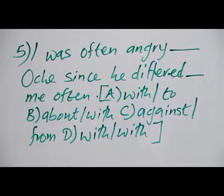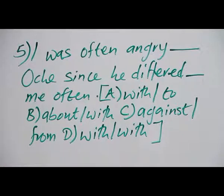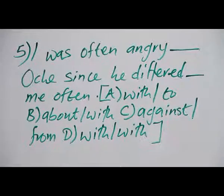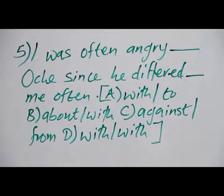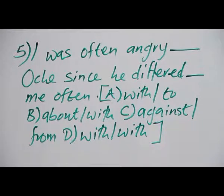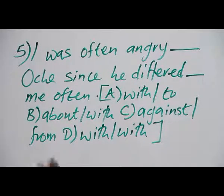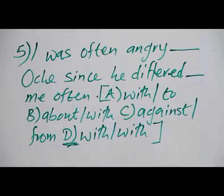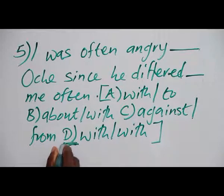Question number five: 'I was often angry ___ since he differed ___ me often.' Option A: 'with us / to.' Option B: 'about us / with.' Option C: 'against us / from.' Option D: 'with / with.' The answer is D — you are angry 'with' somebody, and you differ 'with' a person. So the answer to question number five is D.